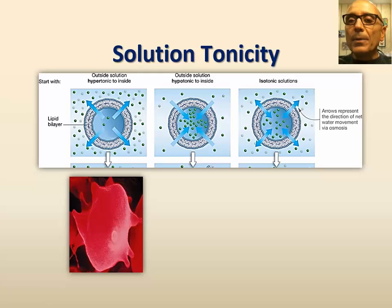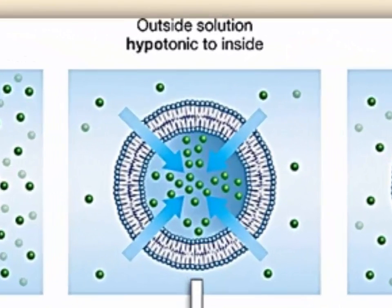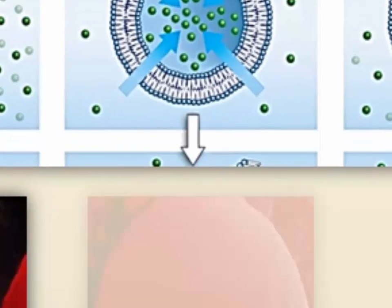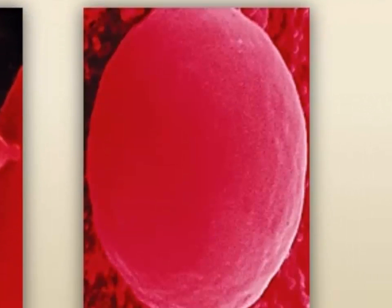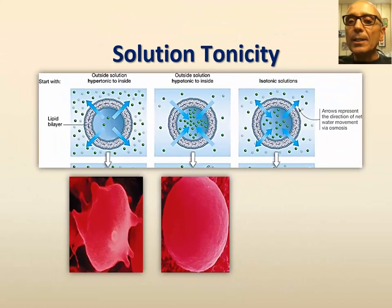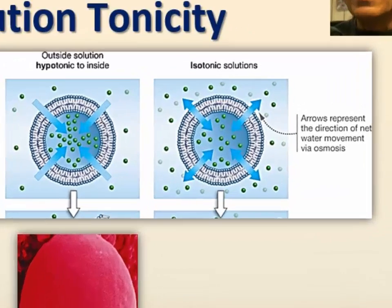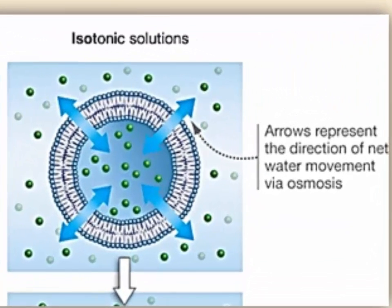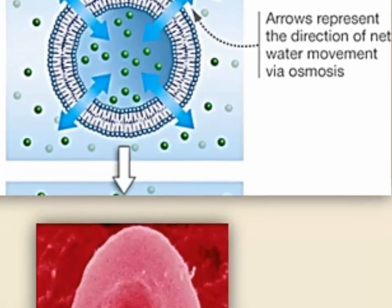If the solution outside is hypotonic, meaning lower solute concentration and higher water concentration compared to the inside of the cell, water diffuses by osmosis into the cell, resulting in swelling of the cell. In the third example, the inside and the outside of the cell are of equal tonicity, or isotonic. In this case, there is no net change in volume and therefore no change in the cell size and shape.